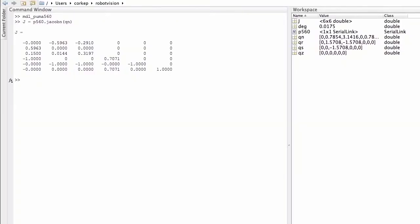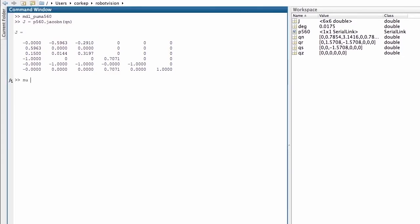We're now going to look at resolved rate motion control and I've already computed the Jacobian matrix for the set of joint angles which I call qn. Now what I want to do is specify the spatial velocity that I want my robot to have. I'm going to put that into a variable called nu which is the Greek letter that I used to denote spatial velocity. And I'm going to ask for a spatial velocity of 0 in the x, 0 in the y, 1 unit per second in the z direction and no angular velocity. And I'm going to put that into a column vector.